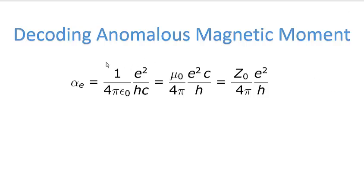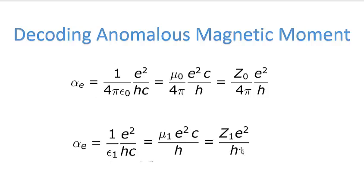What I want to do now is simplify things further by incorporating the 4π term into these three constants. In Coulomb's law, permittivity is always coupled with a 4π term, and similarly in the Biot-Savart law. So I'll create new terms that embed 4π: when you see ε₁, it means 4πε₀, and when you see μ₁, it means μ₀ divided by 4π — and the same with the impedance term. This keeps the 4π term inside the constant.